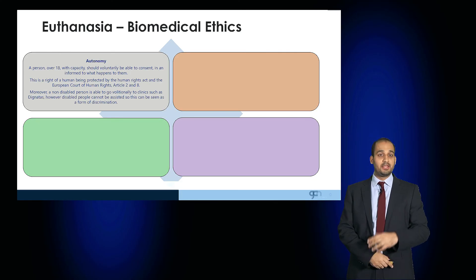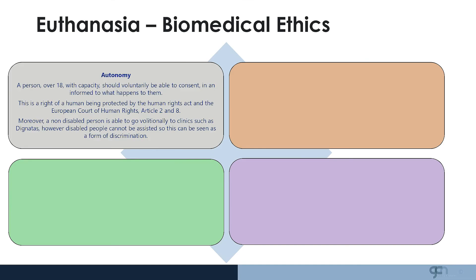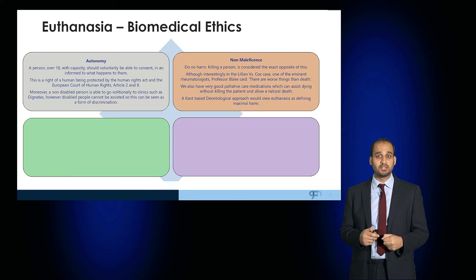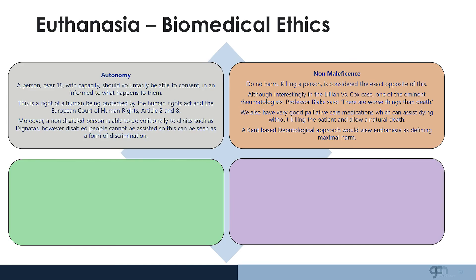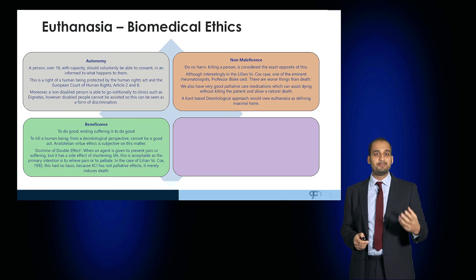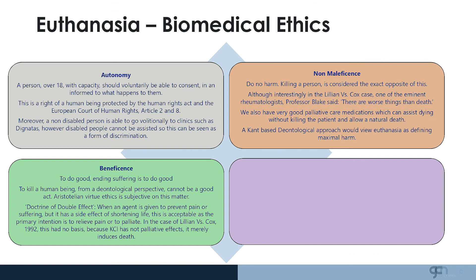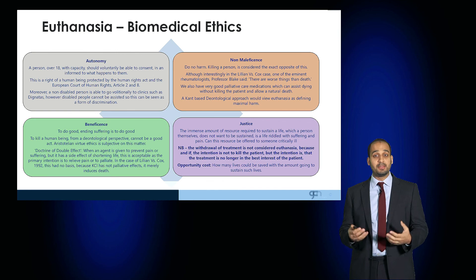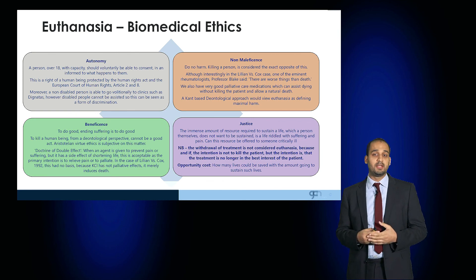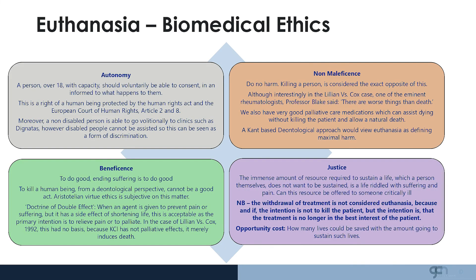Thinking about euthanasia through the four ethical principles: autonomy — should a patient with capacity be able to make this decision? Non-maleficence — do no harm; killing a person is considered the exact opposite of this. Beneficence — to do good; could you argue that you are ending suffering? And justice — think about the resources that are required.